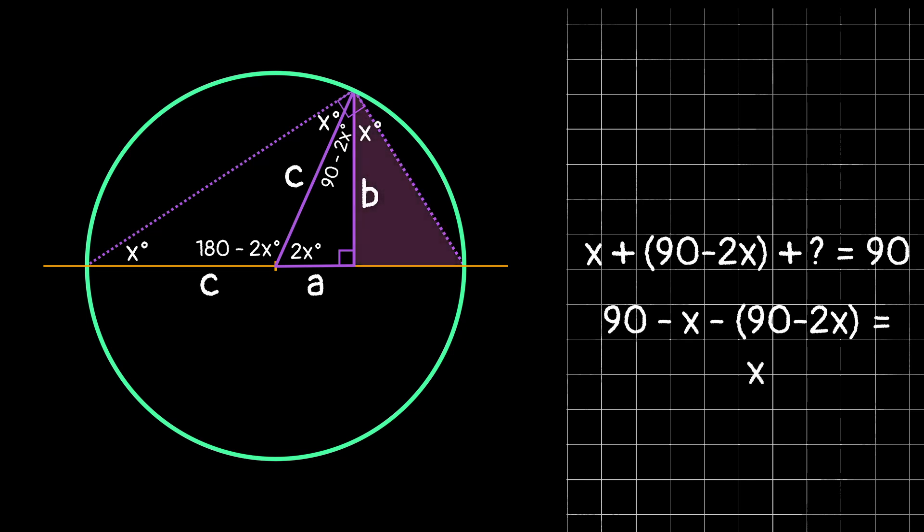Now once again, looking at this third triangle, we know the measures of two of the angles, because we know it is also a right triangle. So to find the measure of the third angle, we end up with 90 minus x. Now we know that the radius of this circle is c, so to find the length of this side of our third triangle, we can take the radius c, subtract out the length of this bottom side of our original right triangle, and end up with c minus a for the side length of this triangle.